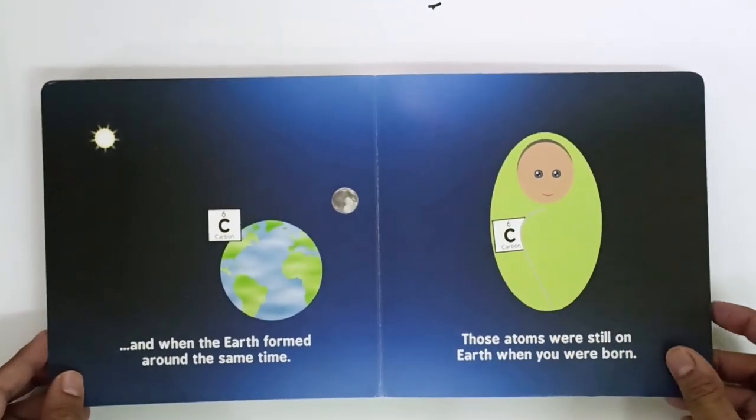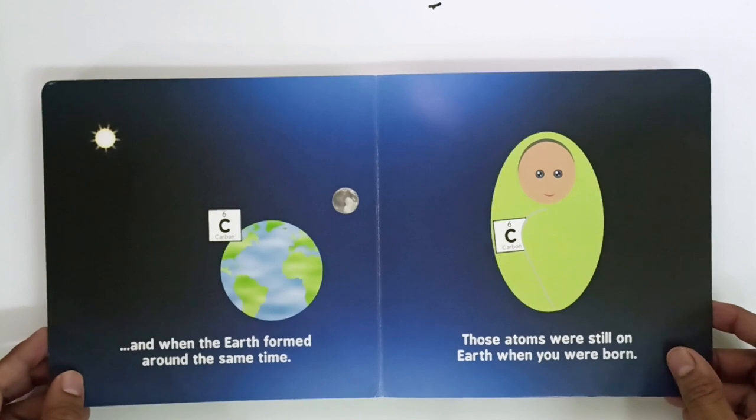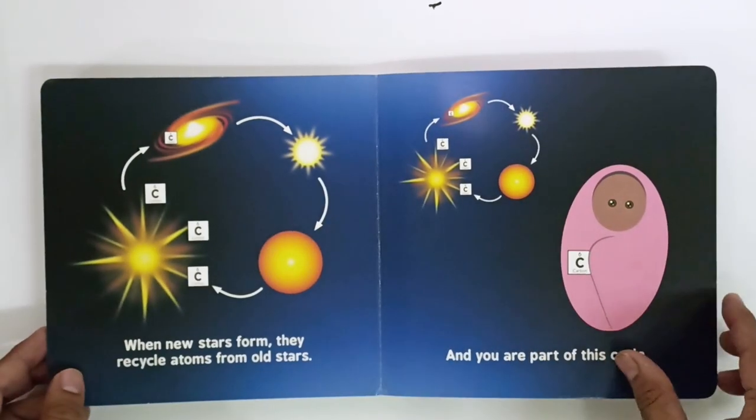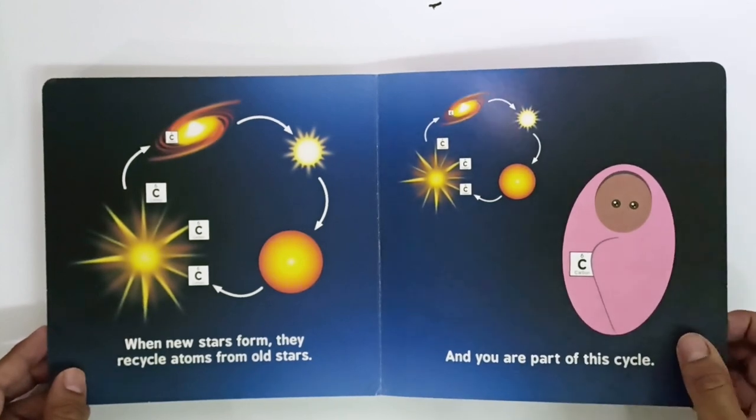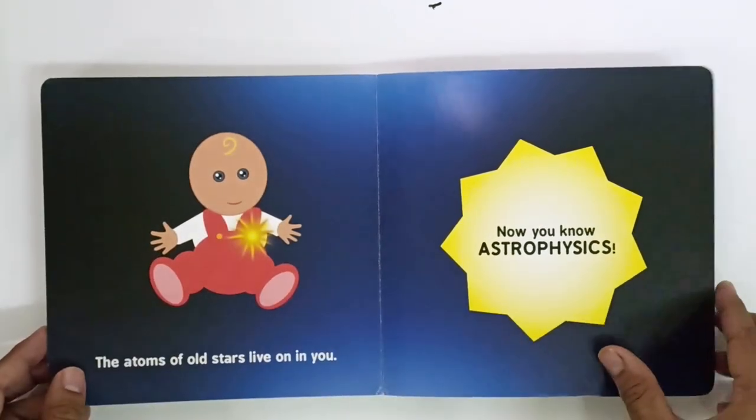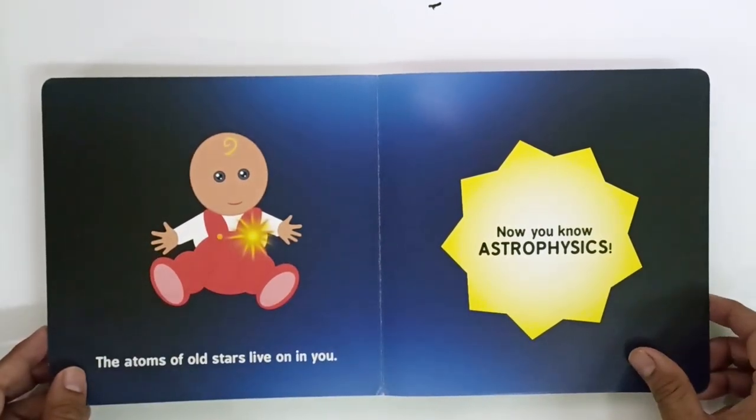And when the Earth formed around the same time, those atoms were still on Earth when you were born. When new stars form, they recycle atoms from old stars, and you are part of this cycle. The atoms of old stars live on in you. Now you know astrophysics.